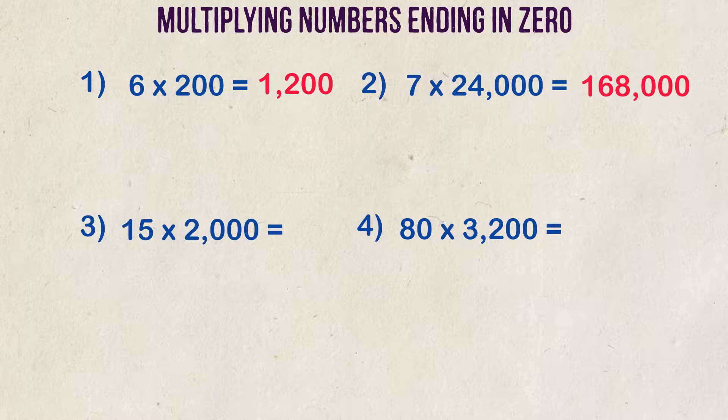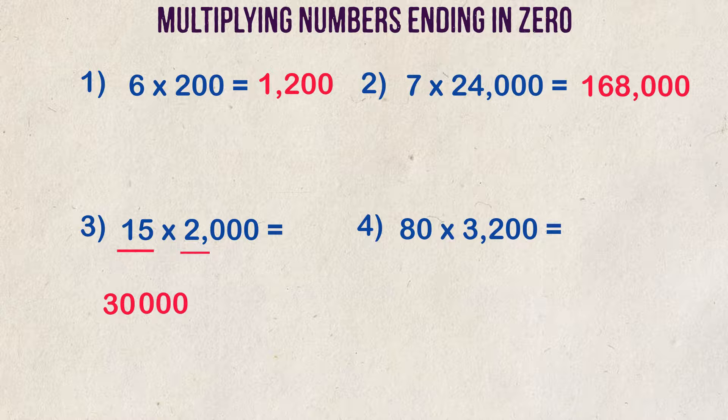Example 3: 15 times 2,000. In this example, let's isolate 15 and 2 and multiply them together. Their product is 30. We can add the other three zeros after 30 and get an answer of 30,000.